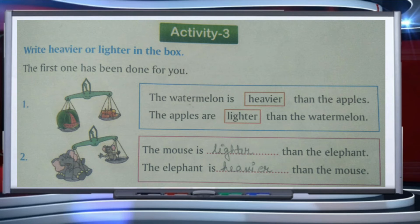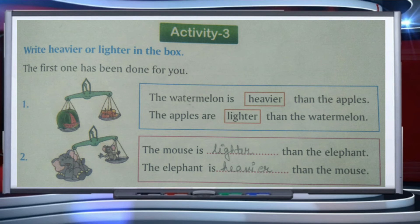Activity 3: write 'heavier' or 'lighter' in the blank. First one — the watermelon is blank than the apples. As you can see, the watermelon is heavier than the apples, and the apples are lighter than the watermelon. Second one — the mouse is blank than the elephant. The mouse is lighter than the elephant.